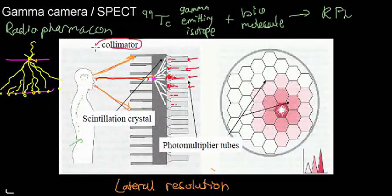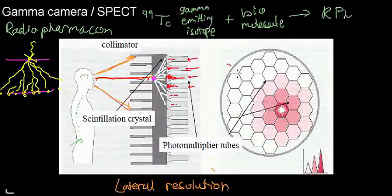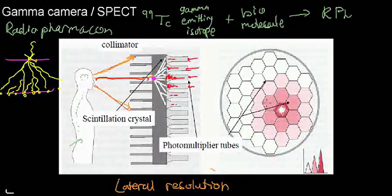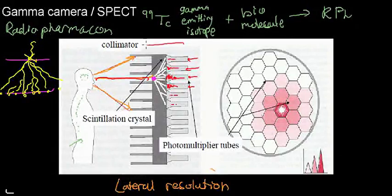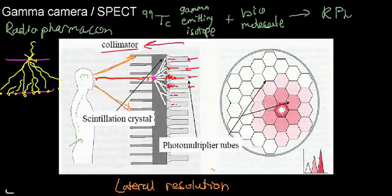The collimator is responsible for lateral resolution in a gamma camera. This was actually a question that came up — many people thought the photomultiplier tubes were responsible, and while having more of them increases resolution to an extent, the answer they are looking for is that the collimator is responsible for lateral resolution.